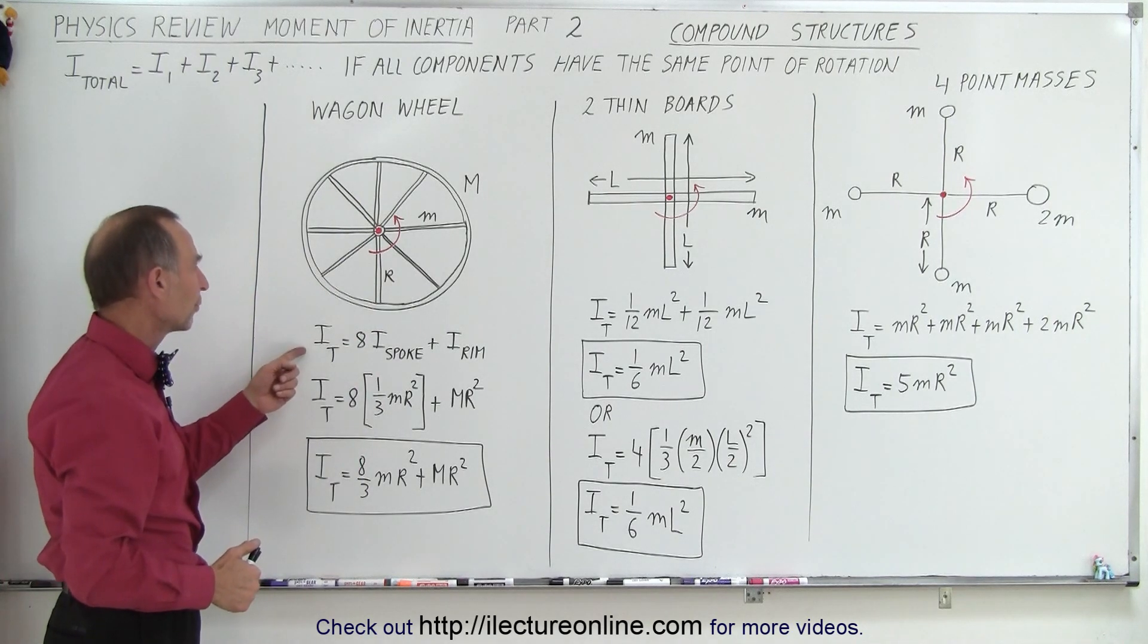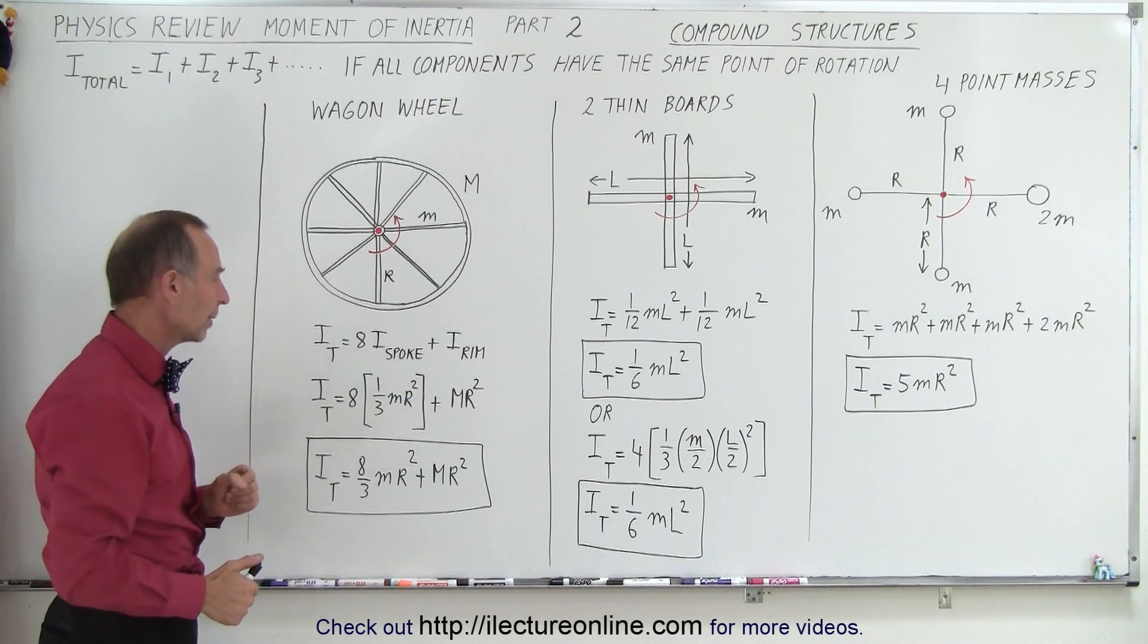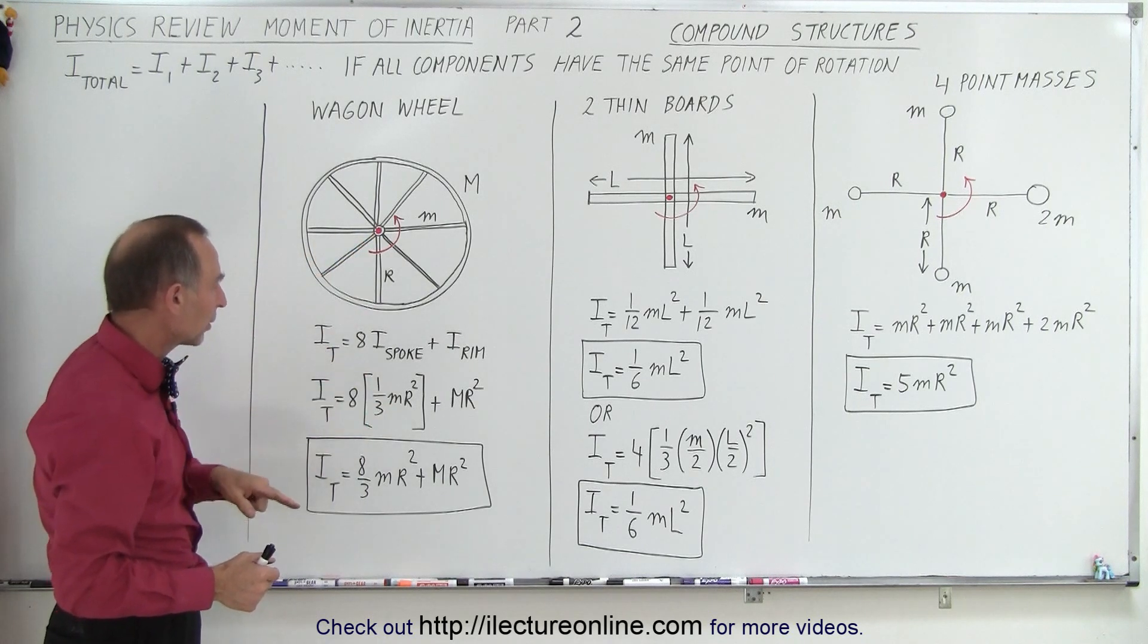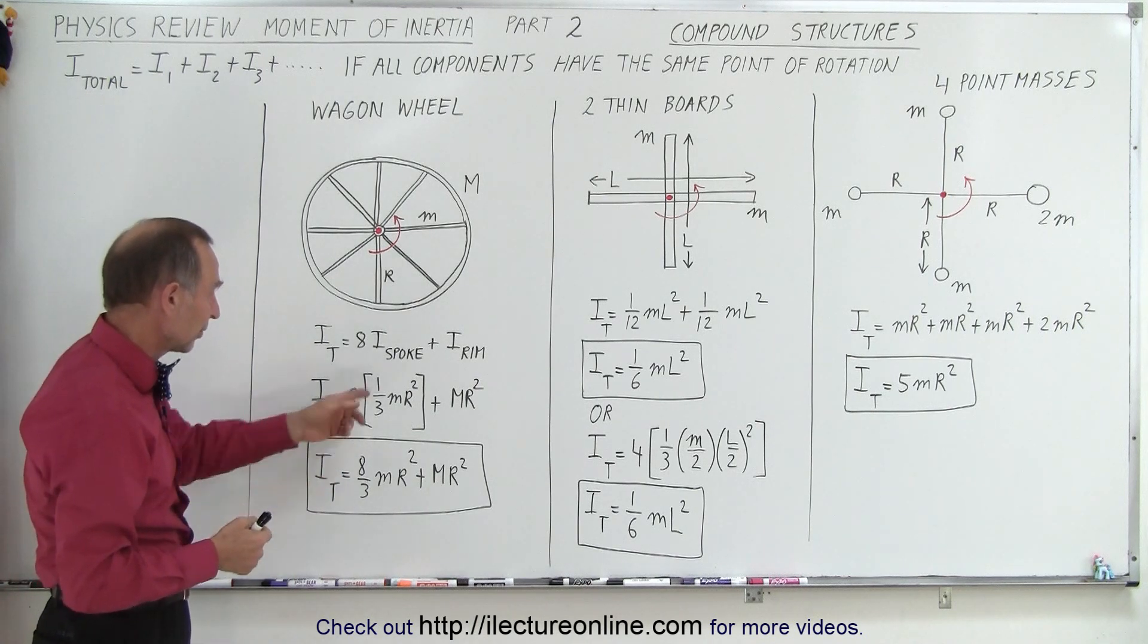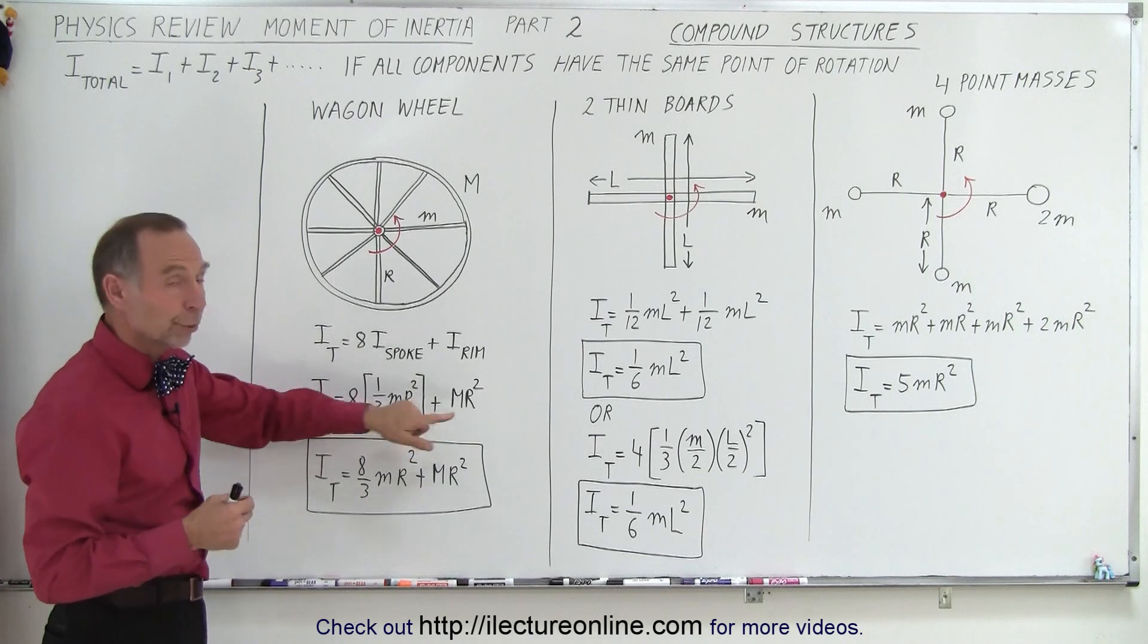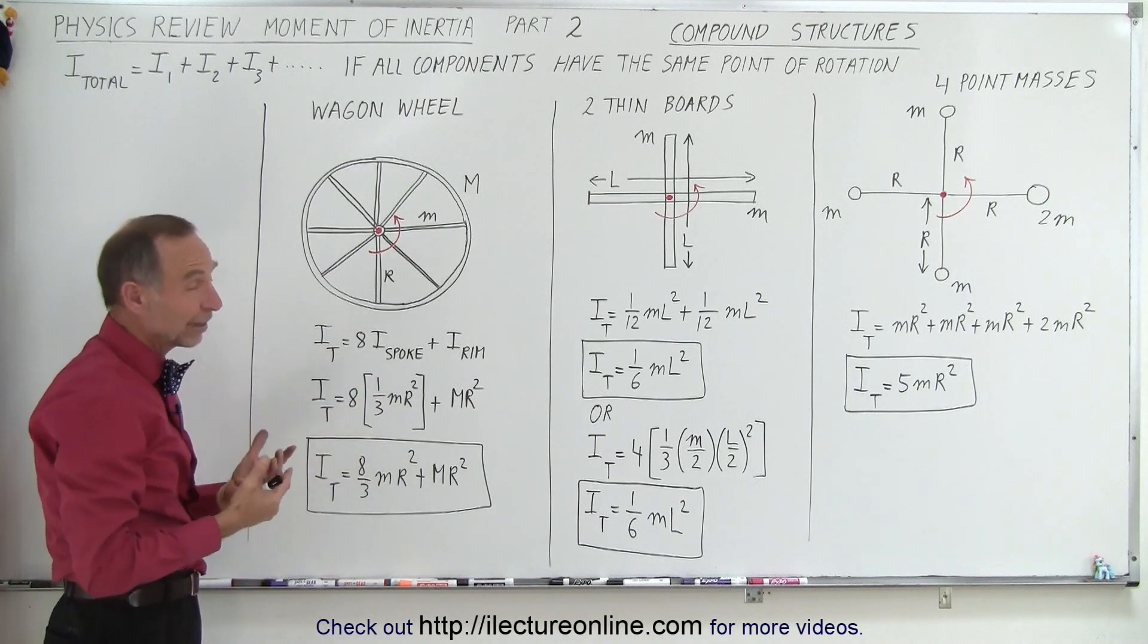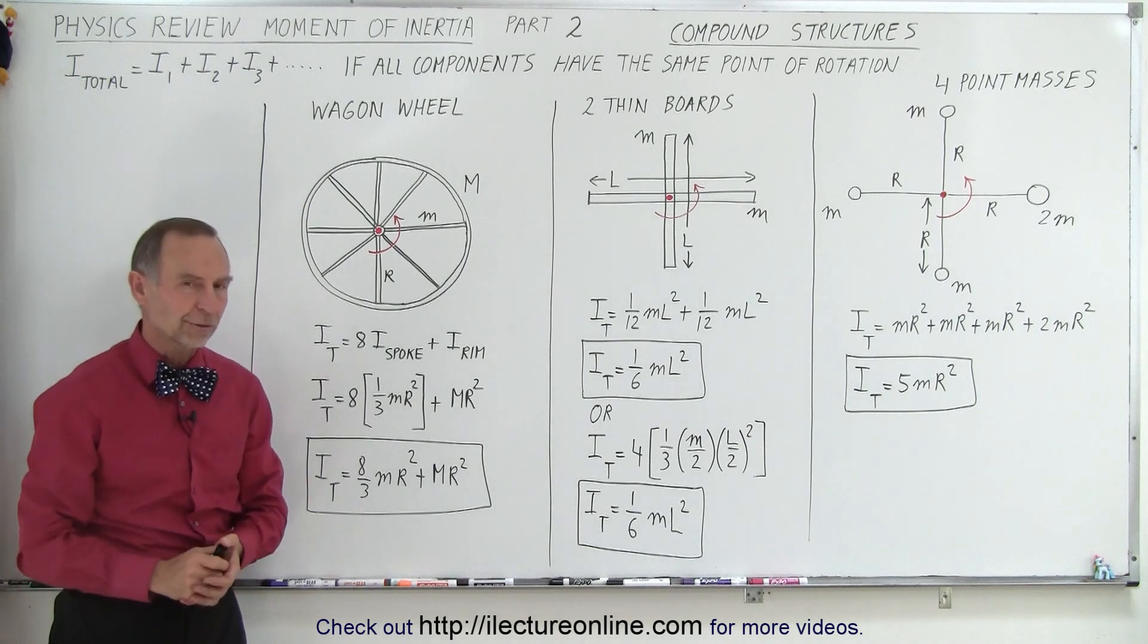So the total moment of inertia is 8 times the moment of inertia of each spoke, plus the moment of inertia of the rim. Each spoke is like a thin rod rotating about the end, and so you use 1/3 mR squared, R, because the length of the rod is the same as the radius of the wheel. And so then we add to that the moment of inertia of the rim. And of course, all the masses at the distance are away from the point of rotation. So it's mR squared. In this case, big MR squared. And so when you add them together, you get the total moment of inertia.